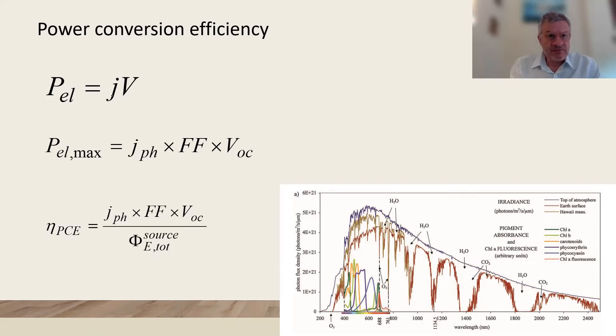The power is given by the product of the current and voltage. The maximum power is the product of photocurrent, fill factor, and photo voltage. The power conversion efficiency is the maximum power over the incoming power of the photons.